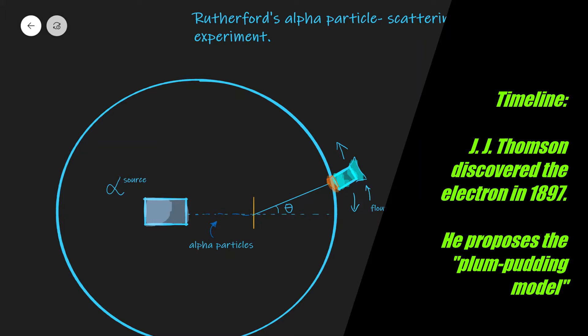So right before this experiment, towards the late 19th century, the existence of the electron was discovered by British scientist named JJ Thompson and he proposed a new model of the atom which became known as the plum pudding model of the atom.